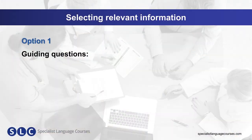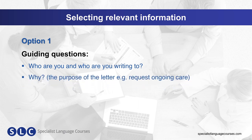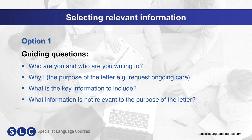Let's look at some tools we can use to select information. One option is to ask yourself some guiding questions such as: who are you and who are you writing to? Why — the purpose of the letter, for example to request ongoing care? What is the key information to include? And what information is not relevant to the purpose of the letter?